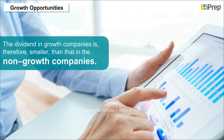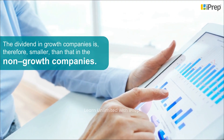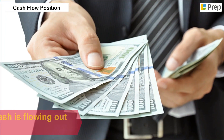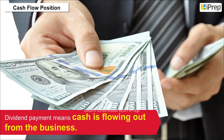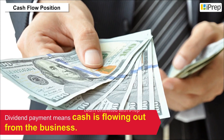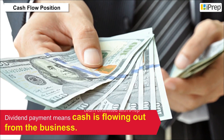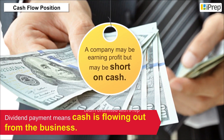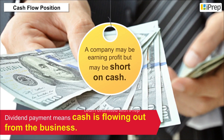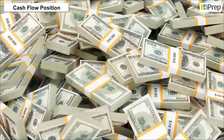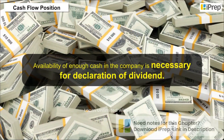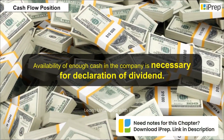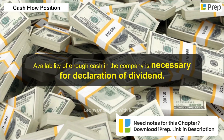Cash flow position: dividend payment means cash is flowing out from the business. A company may be earning profit but may be short on cash. Availability of enough cash in the company is necessary for the declaration of dividends.